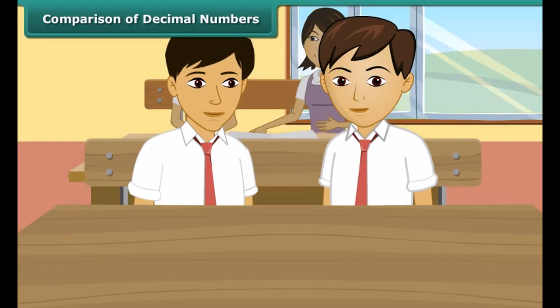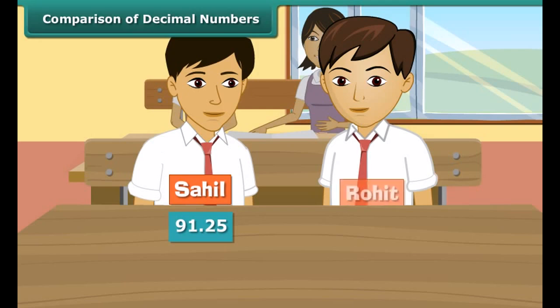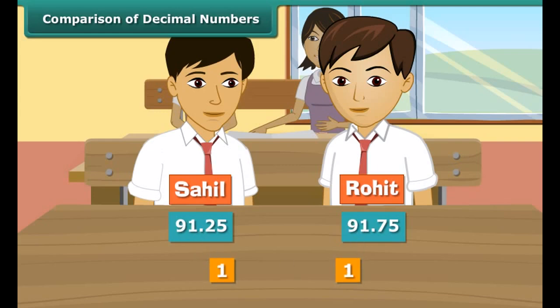Comparison of decimal numbers: Sahil scored 91.25% in his final exams while his friend Rohit scored 91.75%. Friends, can you find out who scored more? First, we compare the digits on the left of the decimal point starting from the leftmost digit. Here the digits 9 and 1 are the same. Thus, we compare the digits on the right of the decimal point starting from the tenths place. We find that 7 is greater than 2, so 91.75 is greater than 91.25. Thus, Rohit scored more than Sahil.